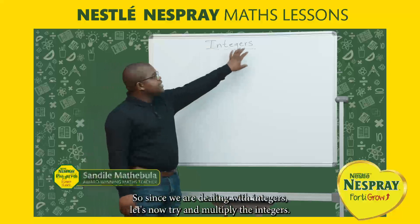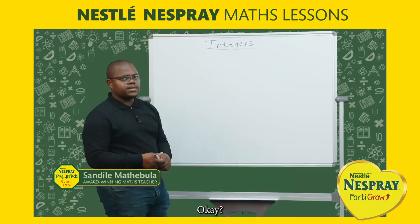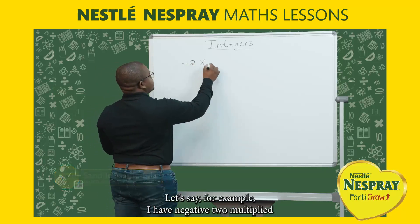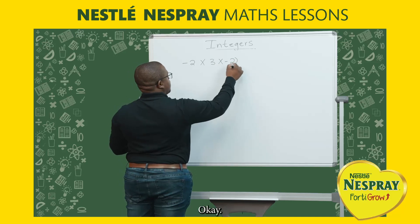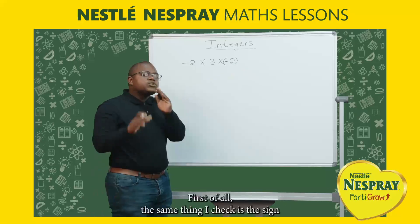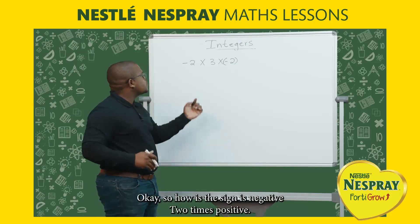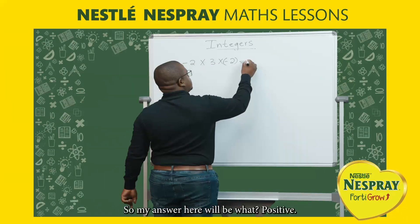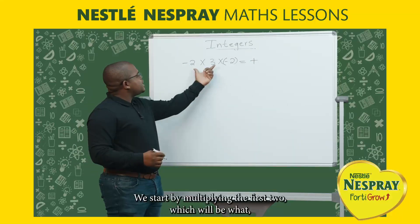Since we are dealing with integers, let's try and multiply the integers. For example, negative 2 multiply by 3 multiply by negative 2. First of all, I check the sign: negative times positive times negative — so my answer here will be positive.